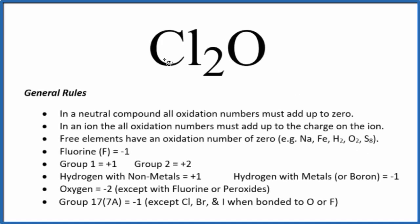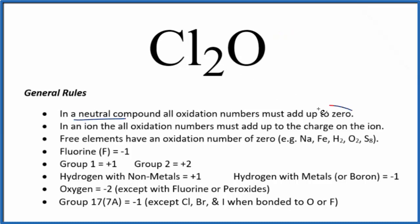To find the oxidation numbers for each element here in Cl2O — this is dichlorine monoxide — we'll use these rules. First off, there's no negative or positive sign after the Cl2O, which means it's a neutral compound. All the oxidation numbers are going to add up to zero.